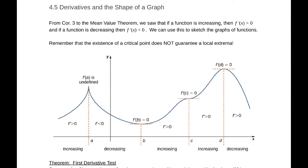At point b, we have a critical point that is a minimum — the function changes from decreasing to increasing, so notice something is happening with the derivative there. At point c, the derivative is 0, it's a critical point, but it is not a maximum or a minimum because the function continues to increase on both sides of that.